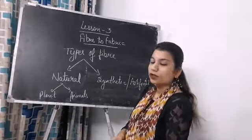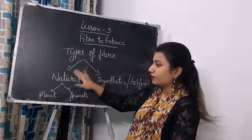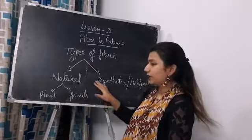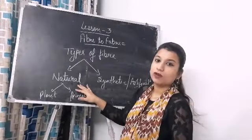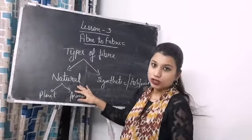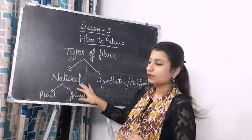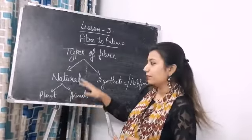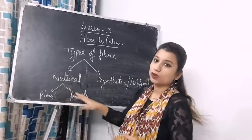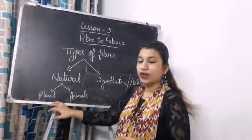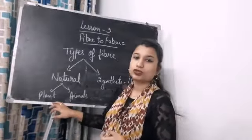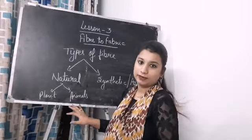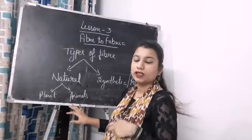Let's talk about types of fiber. There are two types: natural fiber and synthetic fiber. Natural, as the name suggests, comes from nature. There are two natural sources: plants and animals. We get many fibers from plants as well as animals. For example, we get jute and cotton from plants, and we get silk and wool from animals.